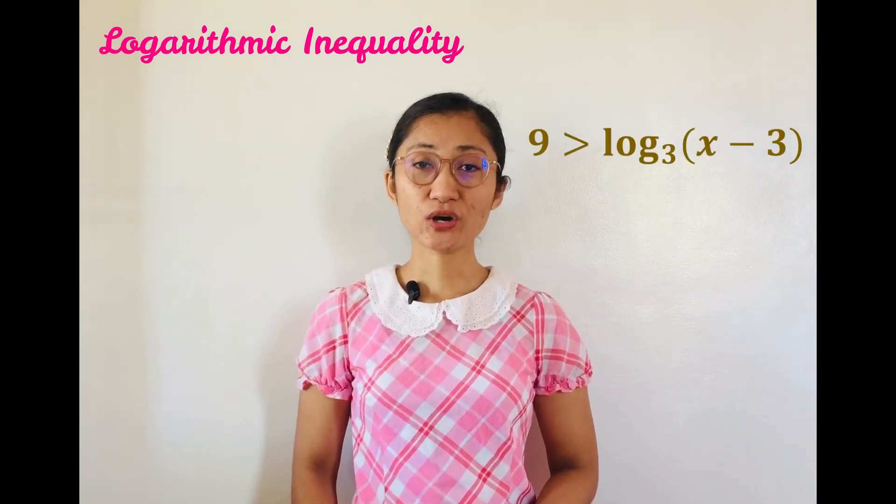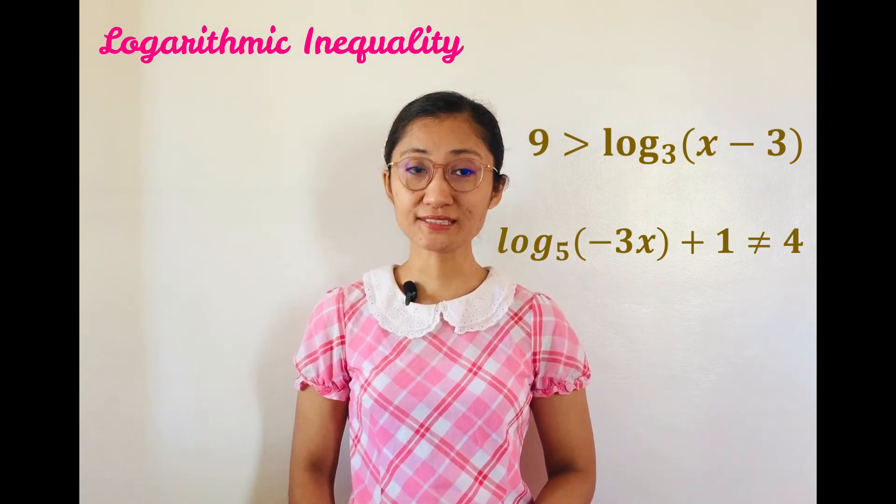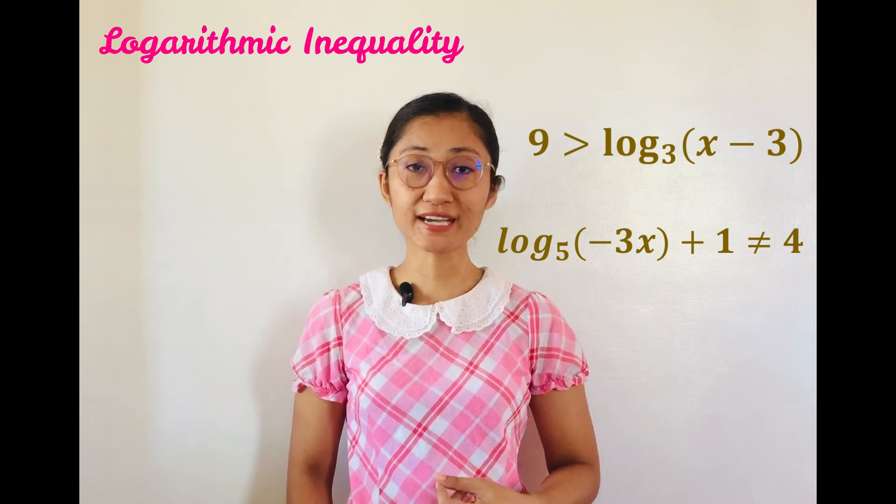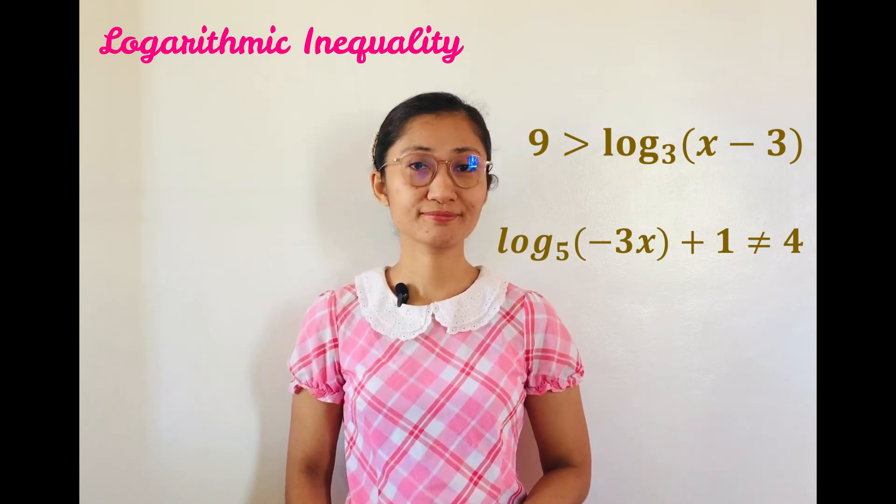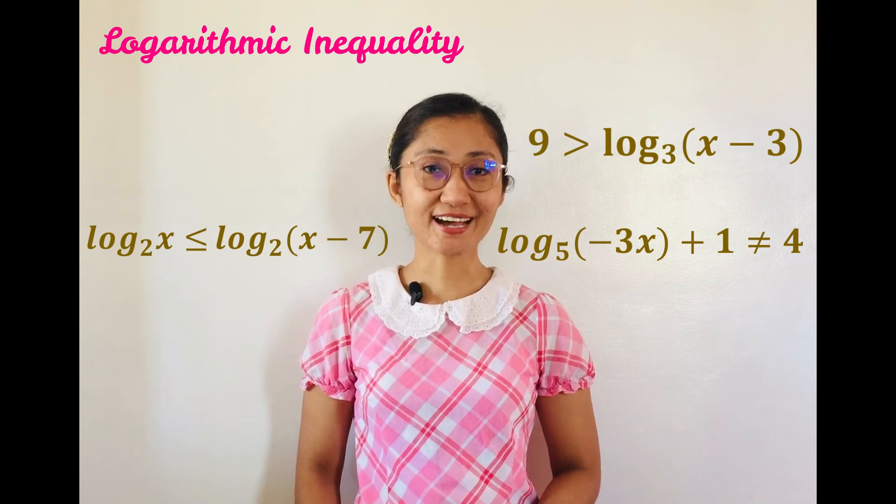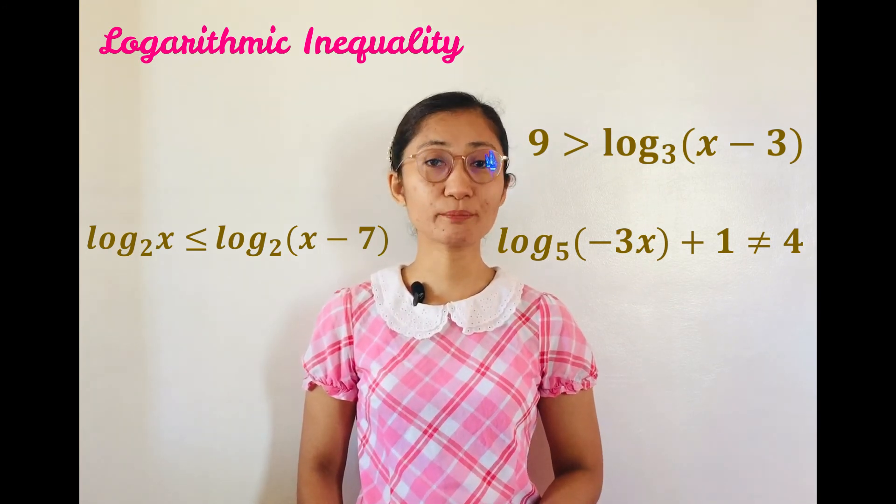Examples are 9 is greater than logarithm of x minus 3 to the base 3. Logarithm of negative 3x plus 1 to the base 5, or logarithm of negative 3x to the base 5 plus 1, is not equal to 4. And logarithm of x to the base 2 is less than or equal to logarithm of x minus 7 to the base 2.